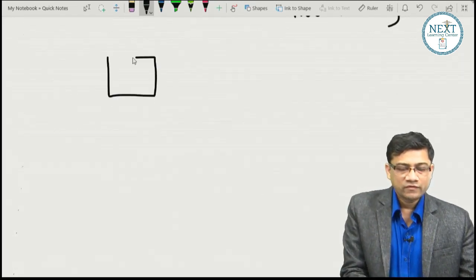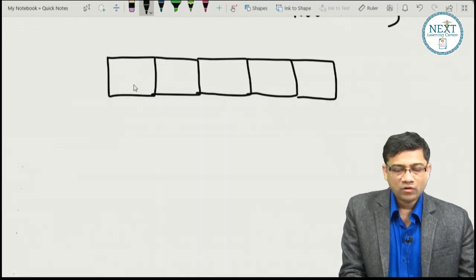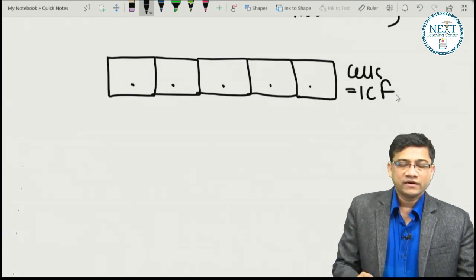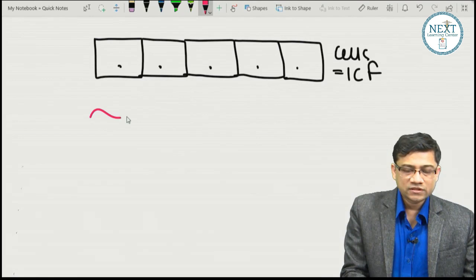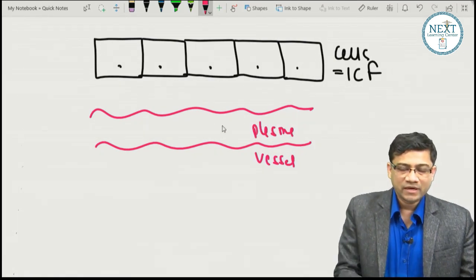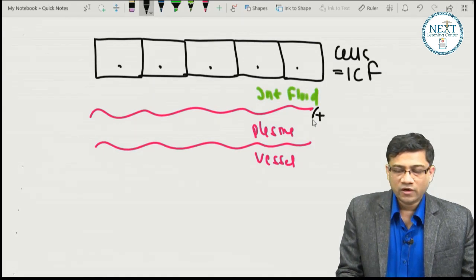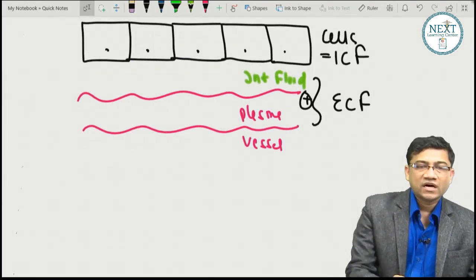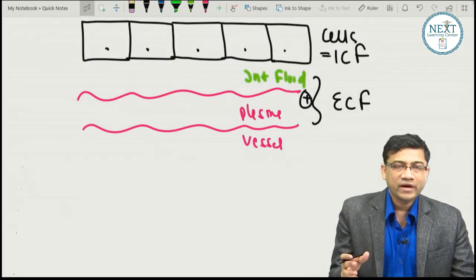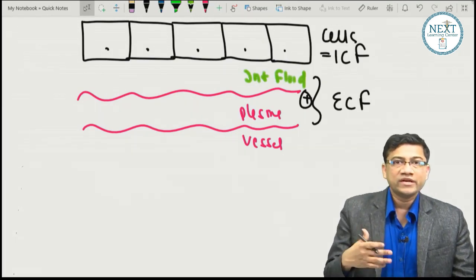We can show a summary of body organization as simple epithelial cells supported by the basal lamina, all containing ICF. The blood vessel contains plasma, and in between the cells and vessels is the interstitial fluid. These two — plasma and interstitial fluid — together form the ECF. Cells are not in dry air; they are surrounded by interstitial fluid like an ocean.